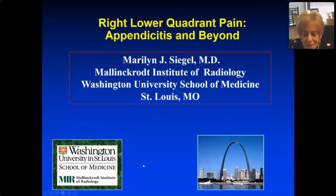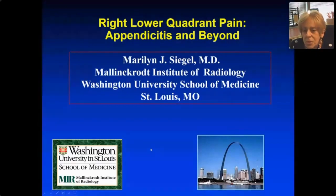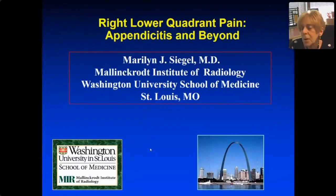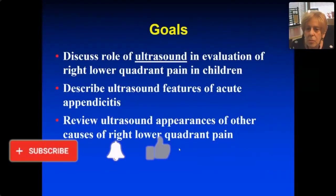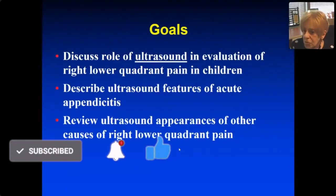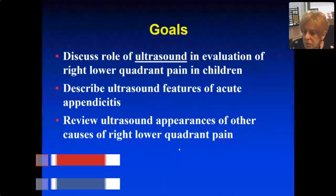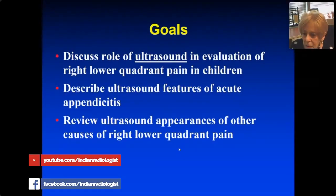Welcome to the lectures. This is the pediatric section. We're going to do some imaging of acute problems, starting with right lower quadrant pain, looking at appendicitis but going beyond that. I'm going to discuss the role of ultrasound in evaluation of acute right lower quadrant pain in children, describe the ultrasound features of acute appendicitis, but also look at other causes of right lower quadrant pain.